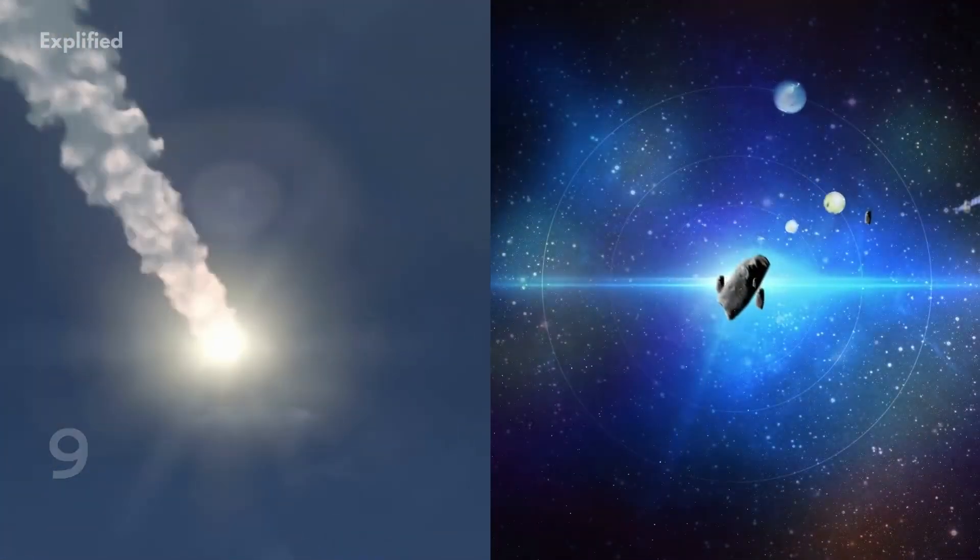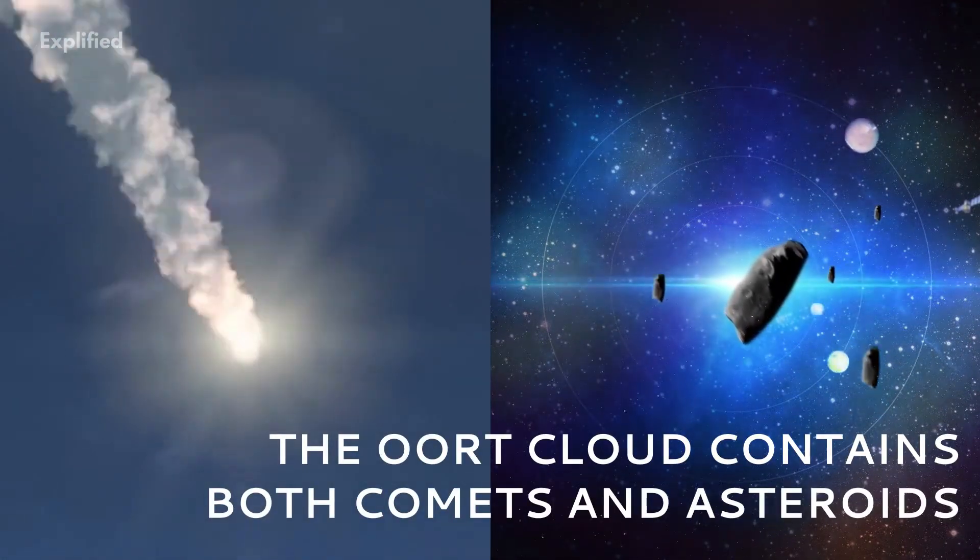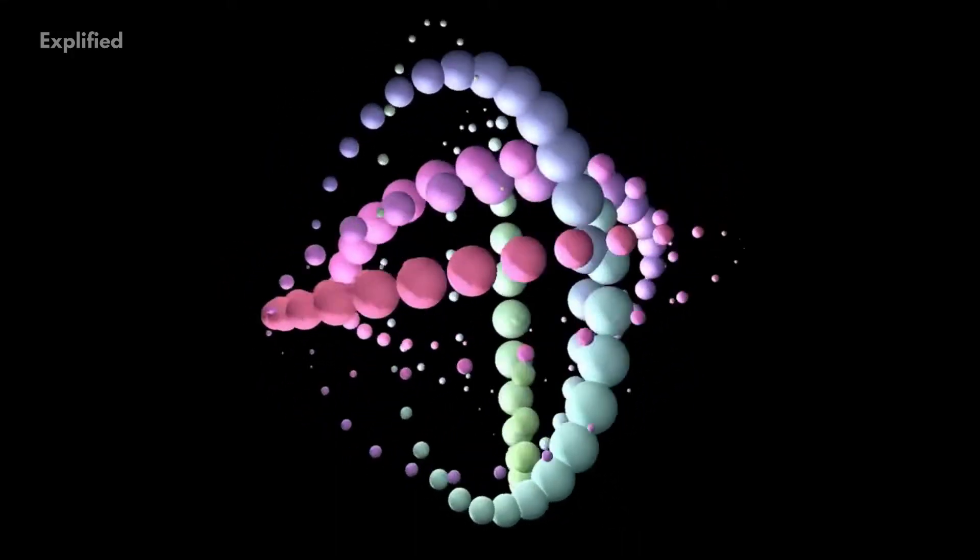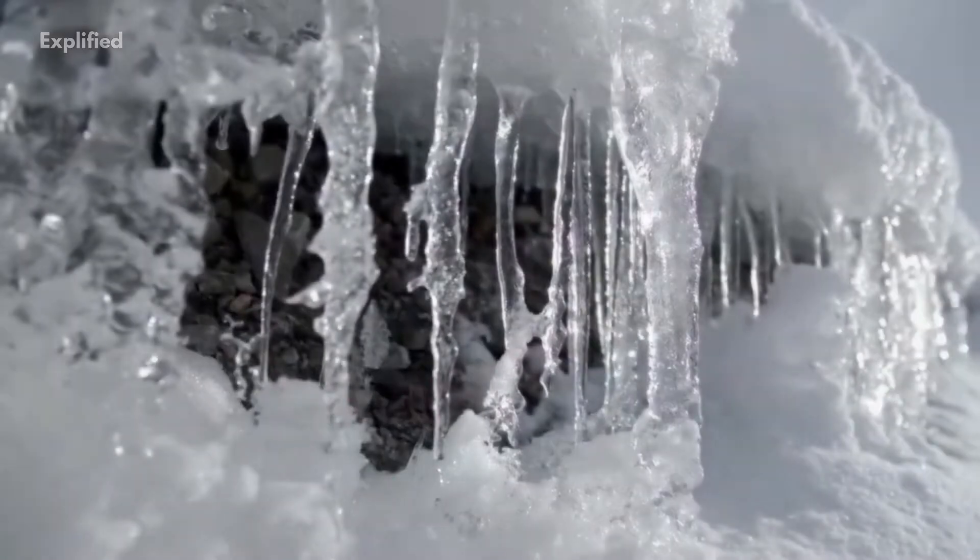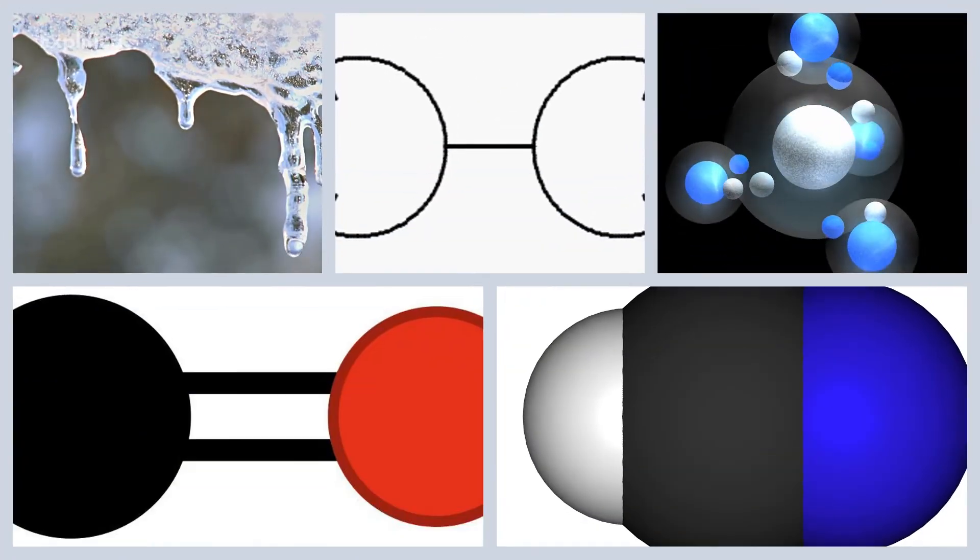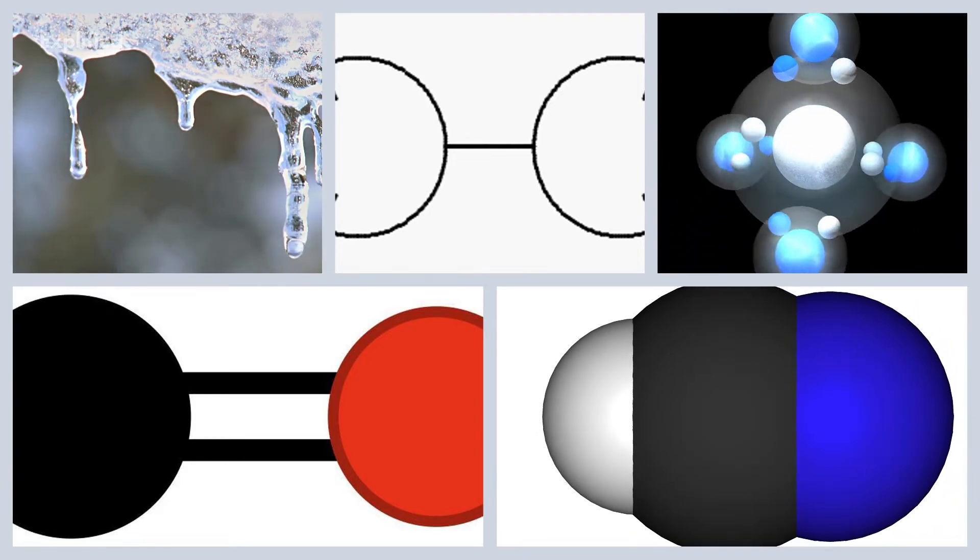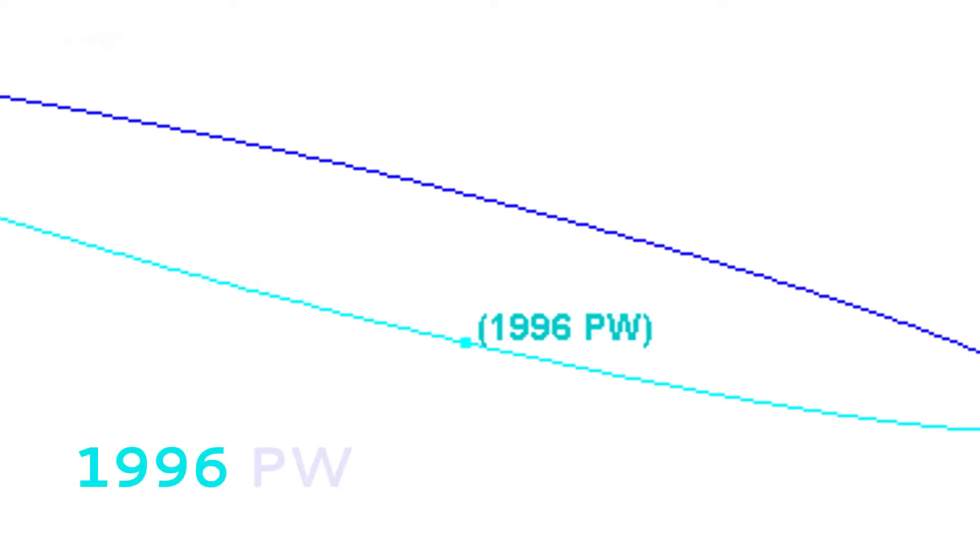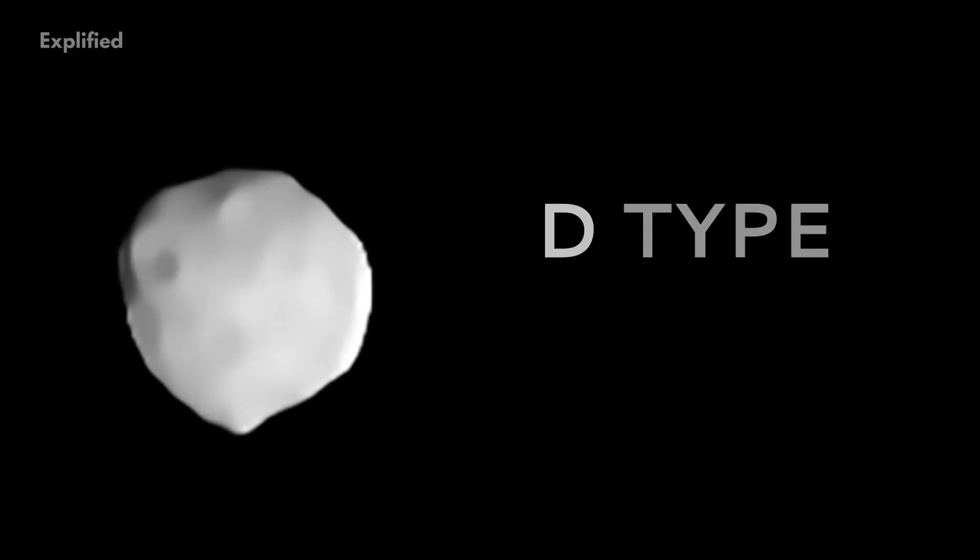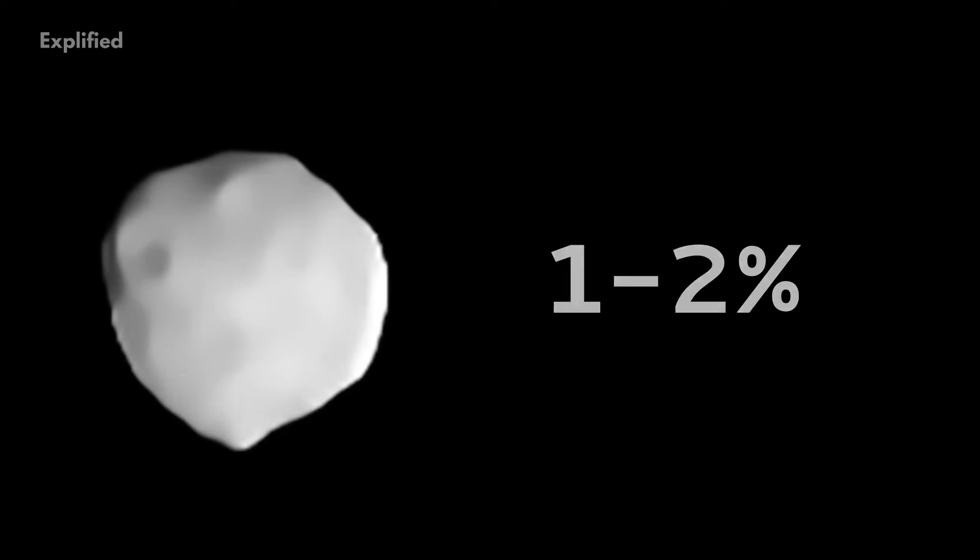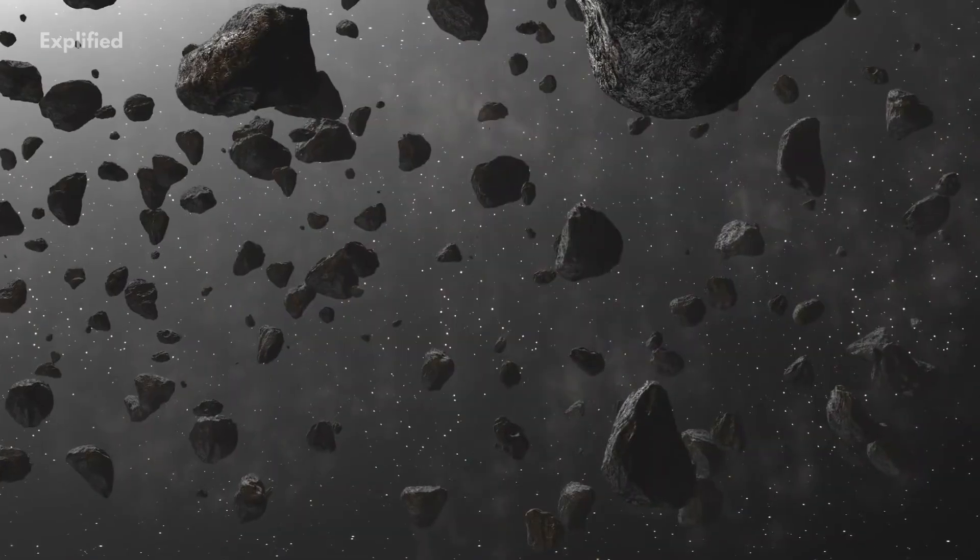Number 9. The Oort cloud contains both comets and asteroids. If what is known about the composition of known comets is taken to be representative of all comets, most objects in the Oort cloud will consist of various ices such as frozen water, methane, ethane, carbon monoxide, and hydrogen cyanide. However, the discovery of an object dubbed 1996 PW that has an orbit that is similar to long-period comets, and which has a composition and appearance similar to D-type asteroids, suggests that between 1% and 2% of the Oort cloud population consists of asteroids.